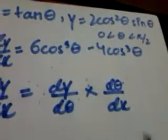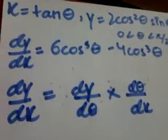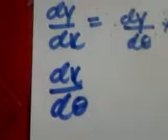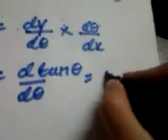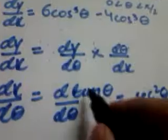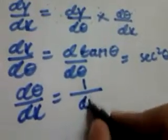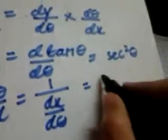Let's begin by finding d theta by dx. First, we find dx by d theta. Since x equals tan theta, dx by d theta equals sec squared theta — this is directly from the formula booklet. Then d theta by dx is simply 1 over dx by d theta, which is 1 over sec squared theta, and that equals cos squared theta.